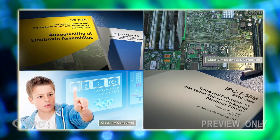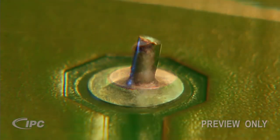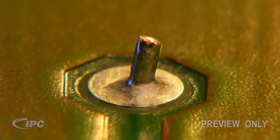Now that you've been introduced to the concept of acceptance requirements, product classes, and soldering terminology, let's examine the acceptance criteria for class 2 through-hole solder joints.